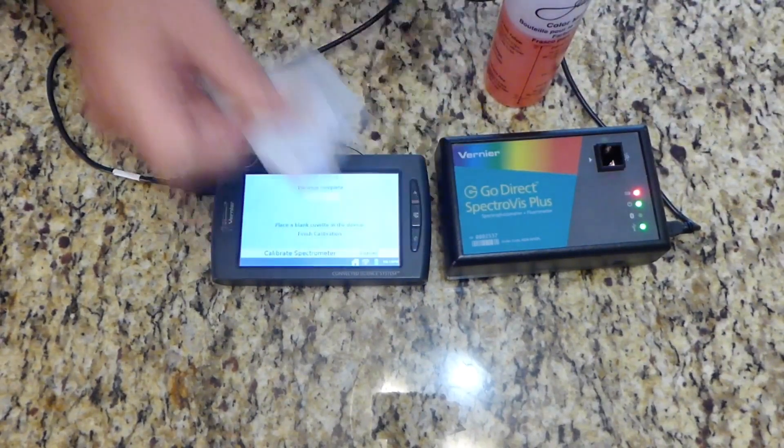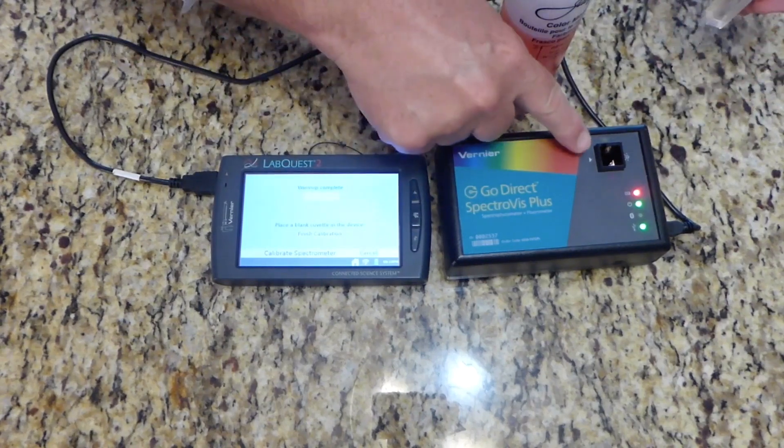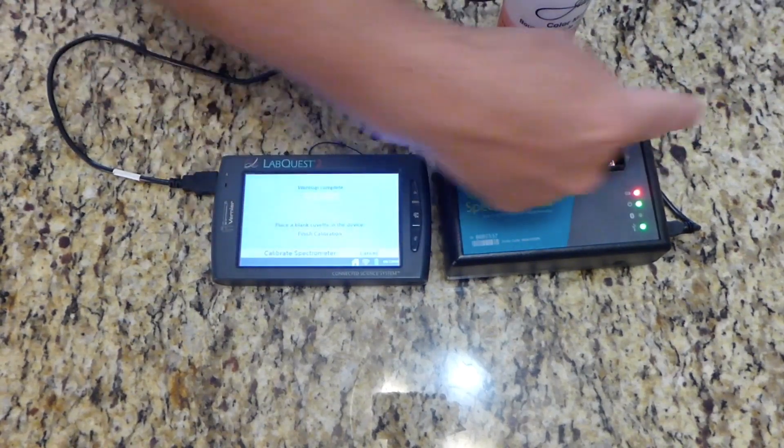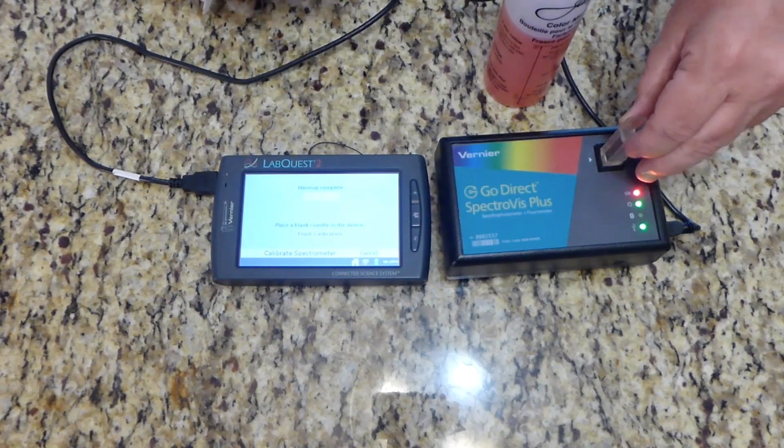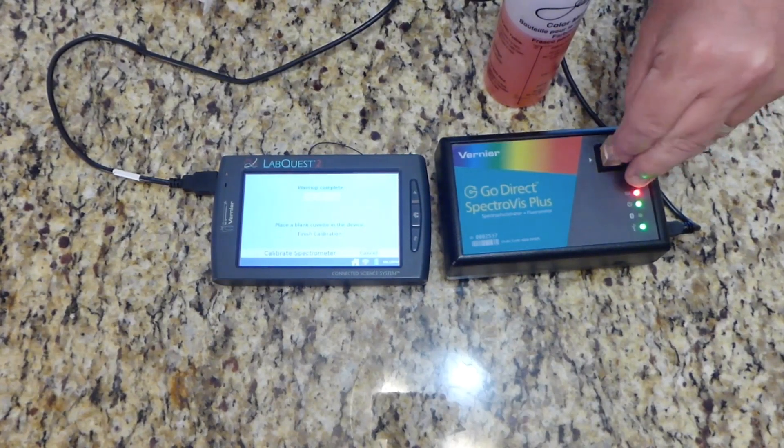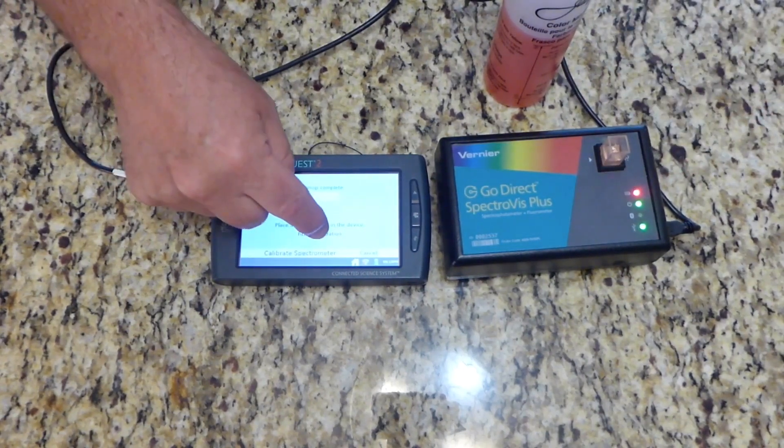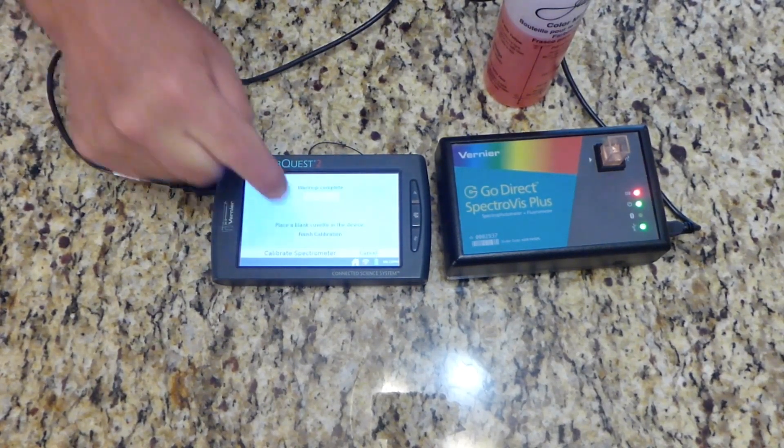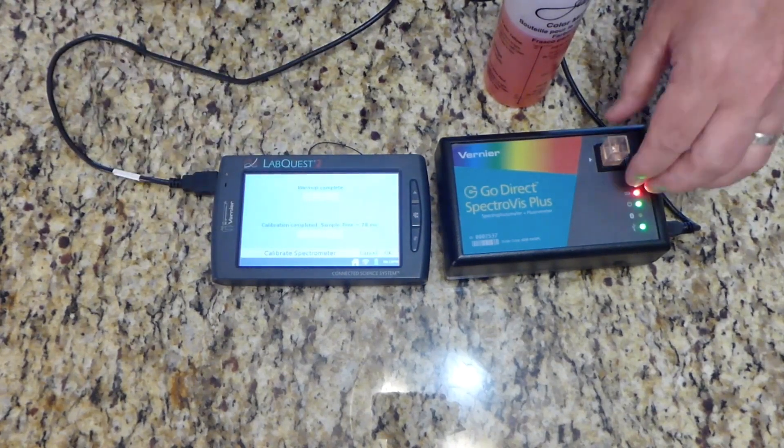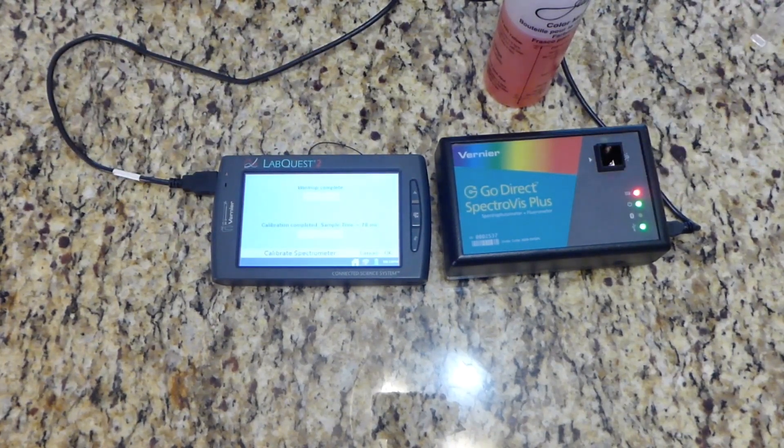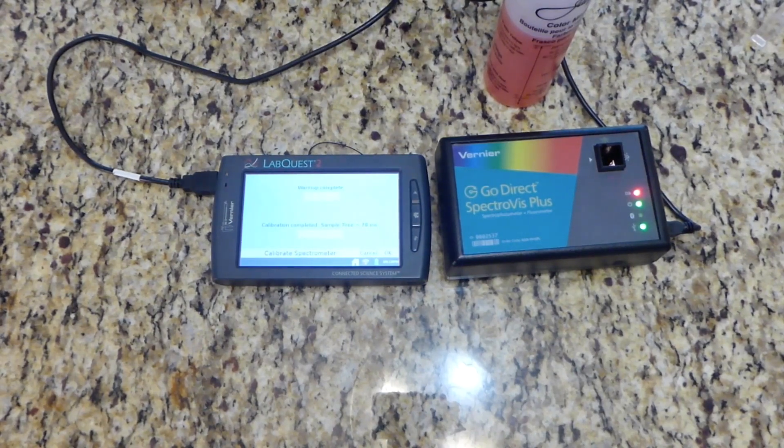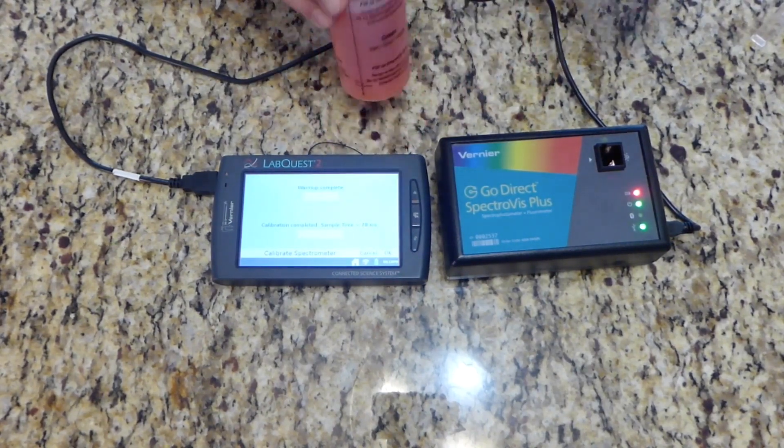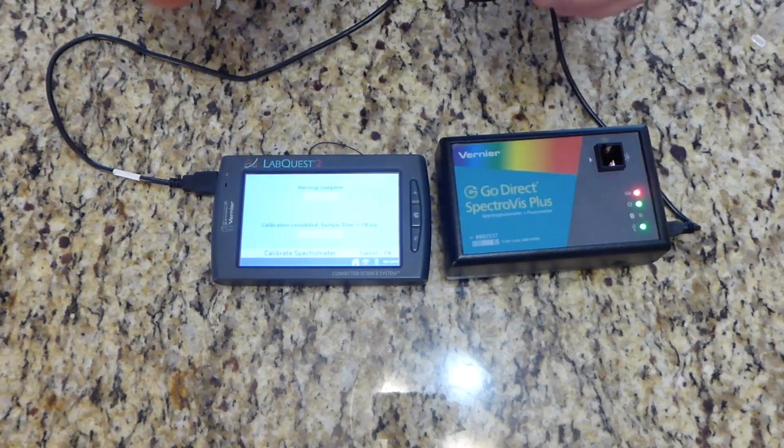After it's warmed up, you take your cuvette full of water, wipe it down. The arrow will tell you what direction it goes in. Pop it in. And you will hit finish calibration. And again, calibration just tells you this is what water looks like. So when you put in a different solution, it's not picking up on the plastic or the water. It's just picking up on the chemical that's in the water.